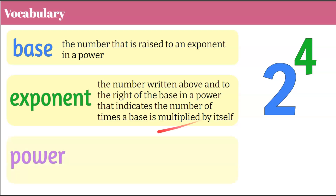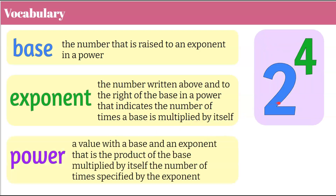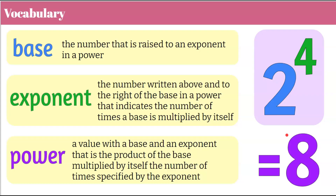Last but not least, we have power. A power is a value with a base and an exponent that is the product of the base multiplied by itself the number of times specified by the exponent. So this entire value is a power. This power has a base of 2 and an exponent of 4, and when we multiply 2 by itself 4 times, it has a value of 16. So 2 to the 4th is a power that is equivalent to 16.